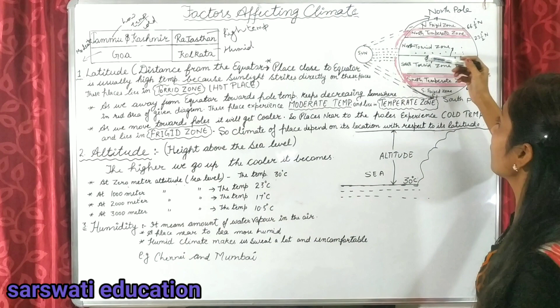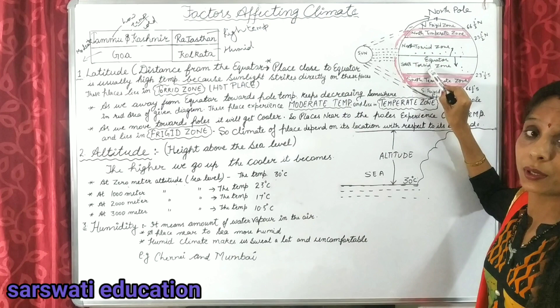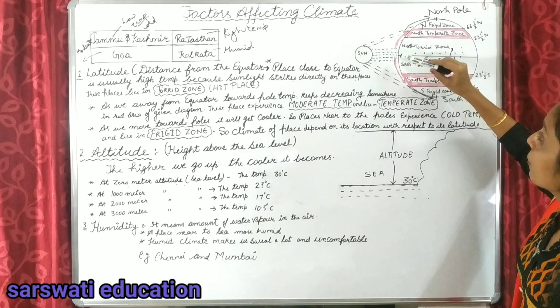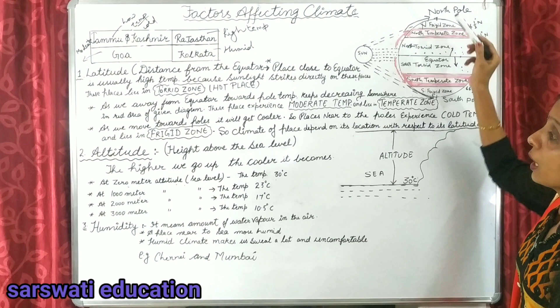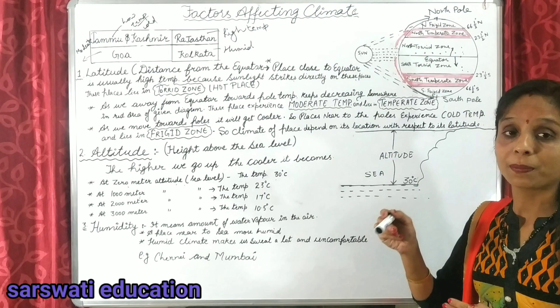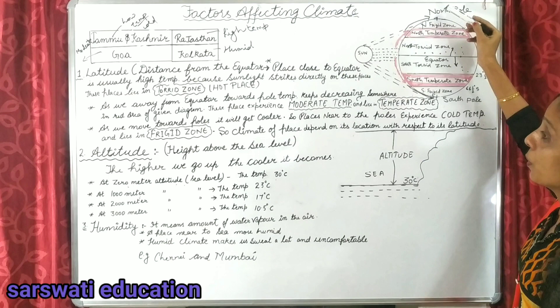In the northern hemisphere we call it the north torrid zone, and in the southern hemisphere we call it the south torrid zone. As we move towards the pole, the temperature keeps decreasing.